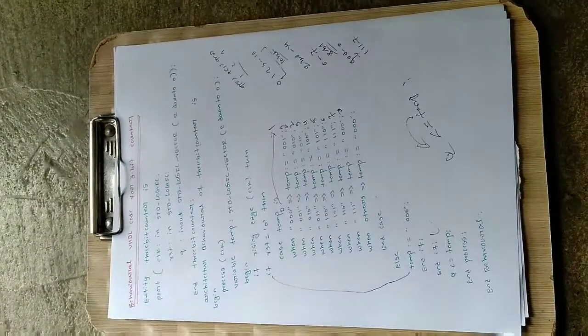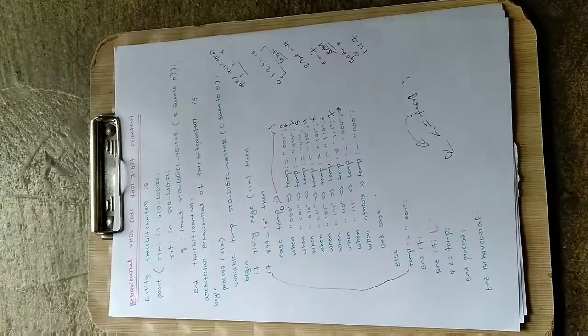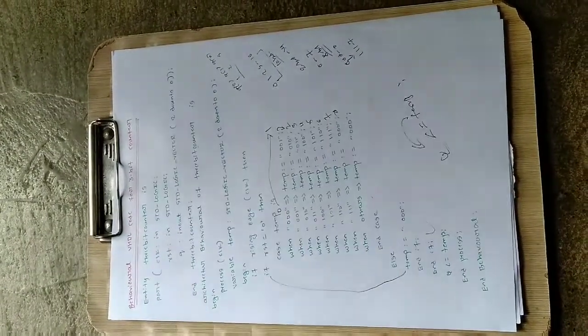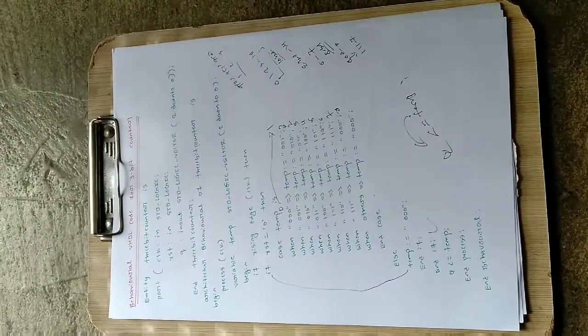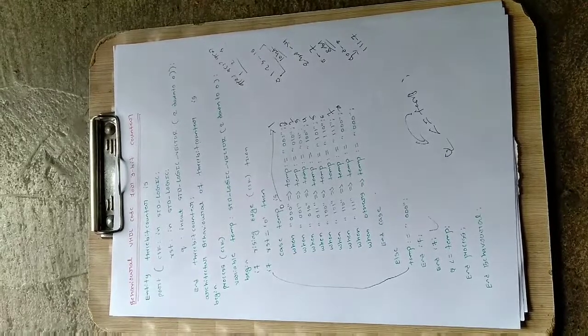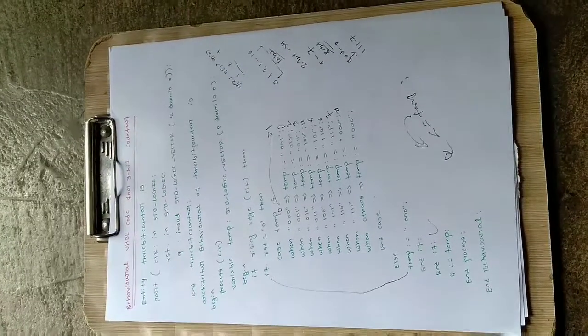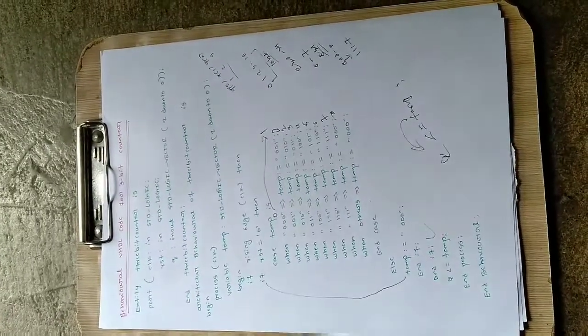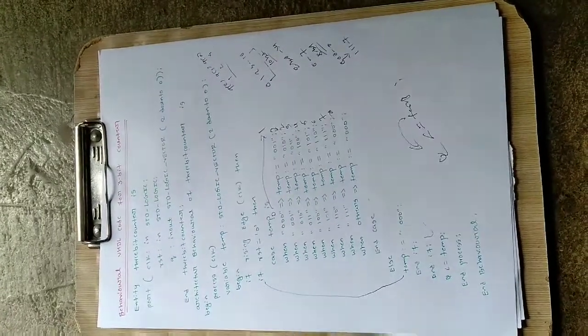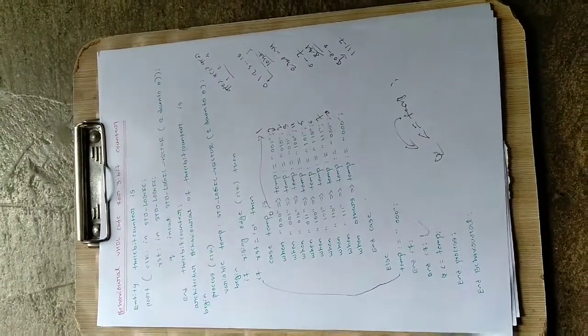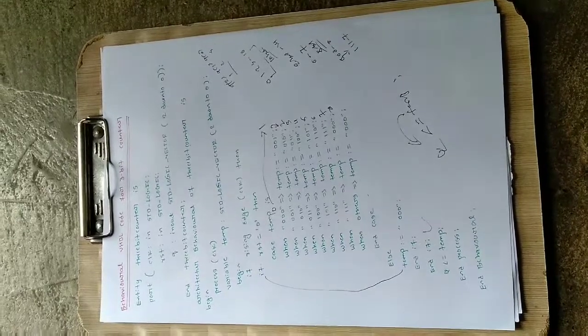So the behavioral VHDL code for the 3-bit counter will be working like this. I hope you liked this video. If you are new to the channel, please hit the like button and subscribe for more updates.